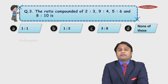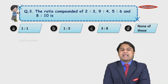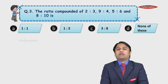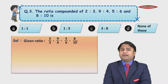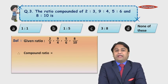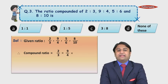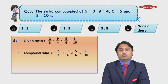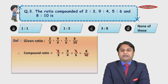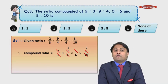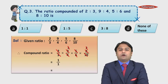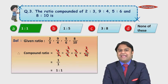MCQ number 3: The ratio compounded of 2 is to 3, 9 is to 4, 5 is to 6, and 8 is to 10 — options are as given on the screen. The compound ratio equals 2/3 × 9/4 × 5/6 × 8/10. Simplifying, the 5s, 10s, 6s, and other factors cancel, leaving 1 upon 1, which is equal to 1 is to 1. Hence option A is the correct answer.